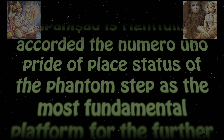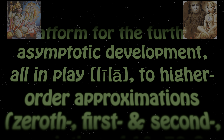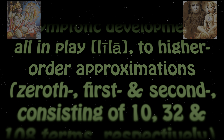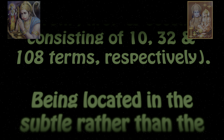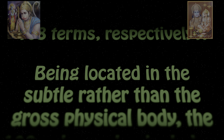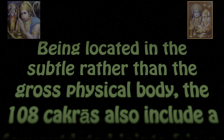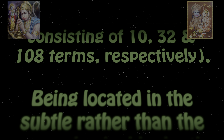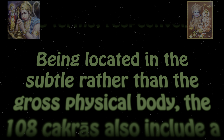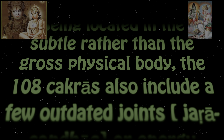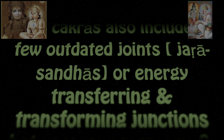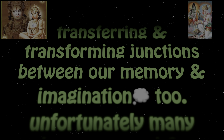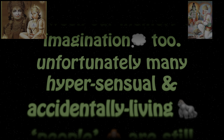Determining the fundamental degrees of freedom in the dimensional reduction from a launchpad of seemingly diverse, infinite dimensional (infinity-D) Anekatva, to the one-dimensional (1D) Advaita, bypassing all the permutations and combinations of two-dimensional (2D) Advaita. The shortest and crispest Mandukya Upanishad is rightfully accorded the numero uno pride of place — status of the phantom step as the most fundamental platform for further asymptotic development. All in play (Leela), to higher-order approximations of 0th, 1st, and 2nd order consisting of 10, 32, and 108 Upanishads respectively.